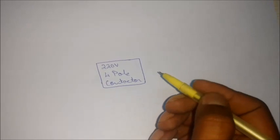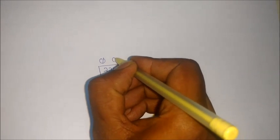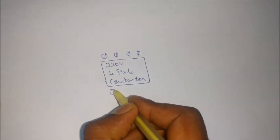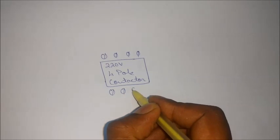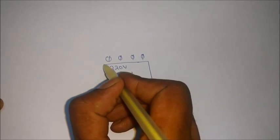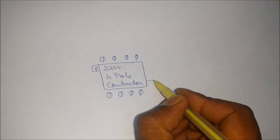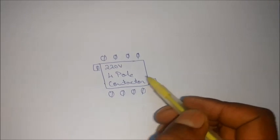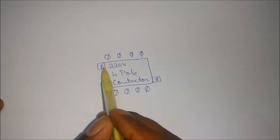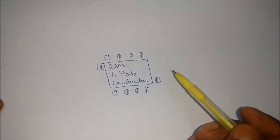The 4-pole contactor basically consists of 4 terminals at the top and 4 terminals at the bottom. Apart from this we have another 2 terminals to activate the solenoid coil inside the 4-pole contactor. The position of these 2 terminals vary from manufacturer to manufacturer.